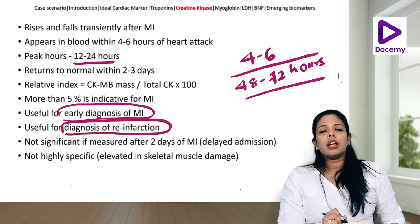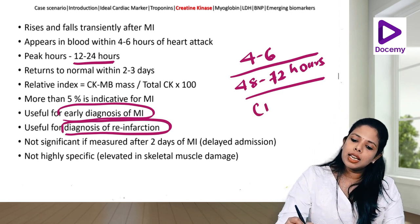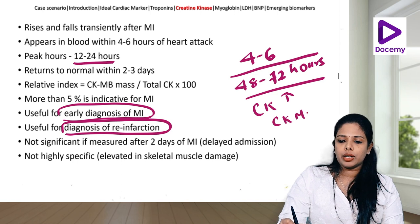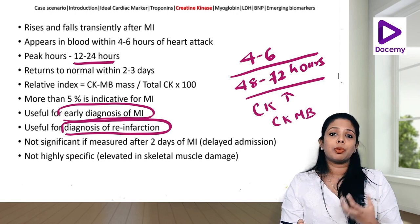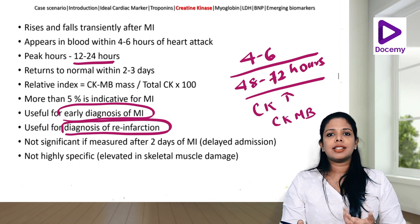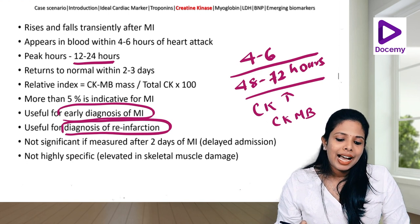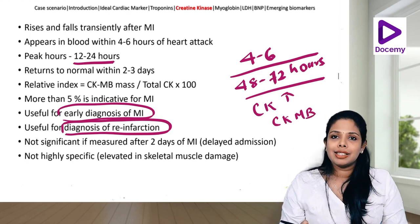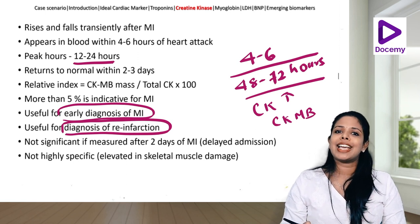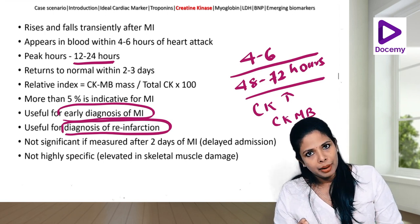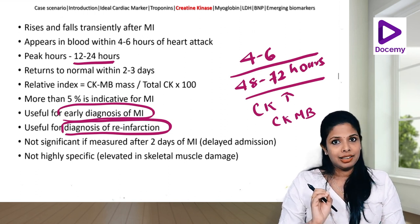Please note the relative index. Sometimes a patient has skeletal or muscle injury and both total CK and CKMB are raised. To determine whether the CK is coming from muscles or cardiac tissue, we use the relative index: CKMB mass divided by CK, multiplied by 100. Less than 3 is suggestive of skeletal muscle injury and more than 5 is indicative of MI. The relative index is only valid when both CK and CKMB are elevated.